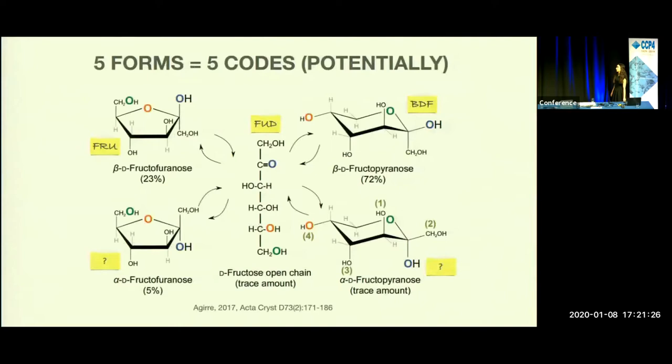Sugars can exist in multiple forms. For example, this is fructose in its open chain form, and it can form furanose forms and pyranose forms. The way the PDB stores ligands is by assigning them a three-letter code, which means that for one sugar we need up to five codes for each of the forms.